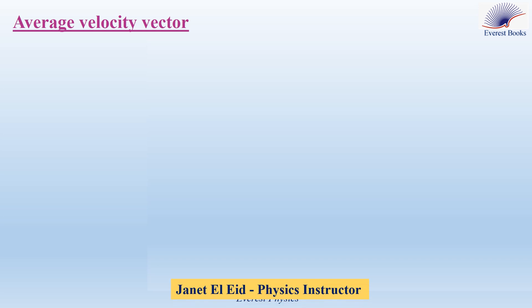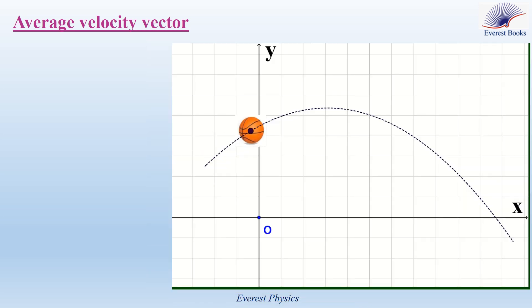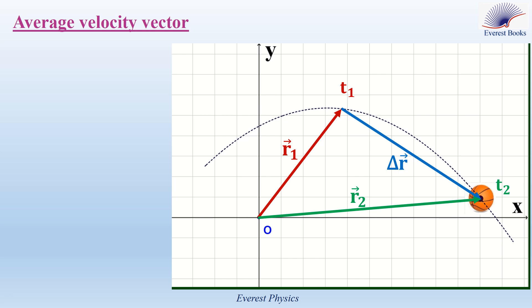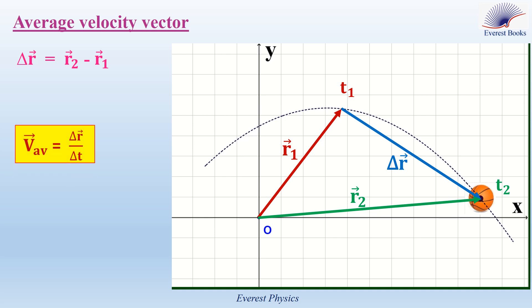Let's move to the average velocity vector. Consider a particle moving on a curved path. We draw the position vector of the particle at an instant T1, then the position vector at instant T2, and then we draw the displacement vector between these two instants. Remember that the displacement vector is equal to the final position vector minus the initial position vector. The average velocity vector can be calculated by dividing the displacement vector by the time taken.